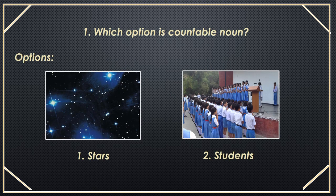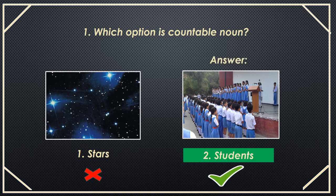First question: which option is Countable Noun? Options — first option: stars. Second option: students. Answer is students. Students is countable, but stars is uncountable.